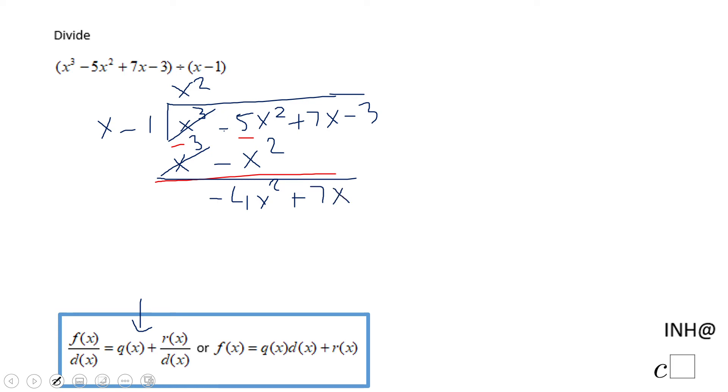What would I multiply x to get negative 4x squared? That will be negative 4x. Negative 4x times x is negative 4x squared. Negative 4x times negative 1 is positive 4x, and again we're going to subtract.